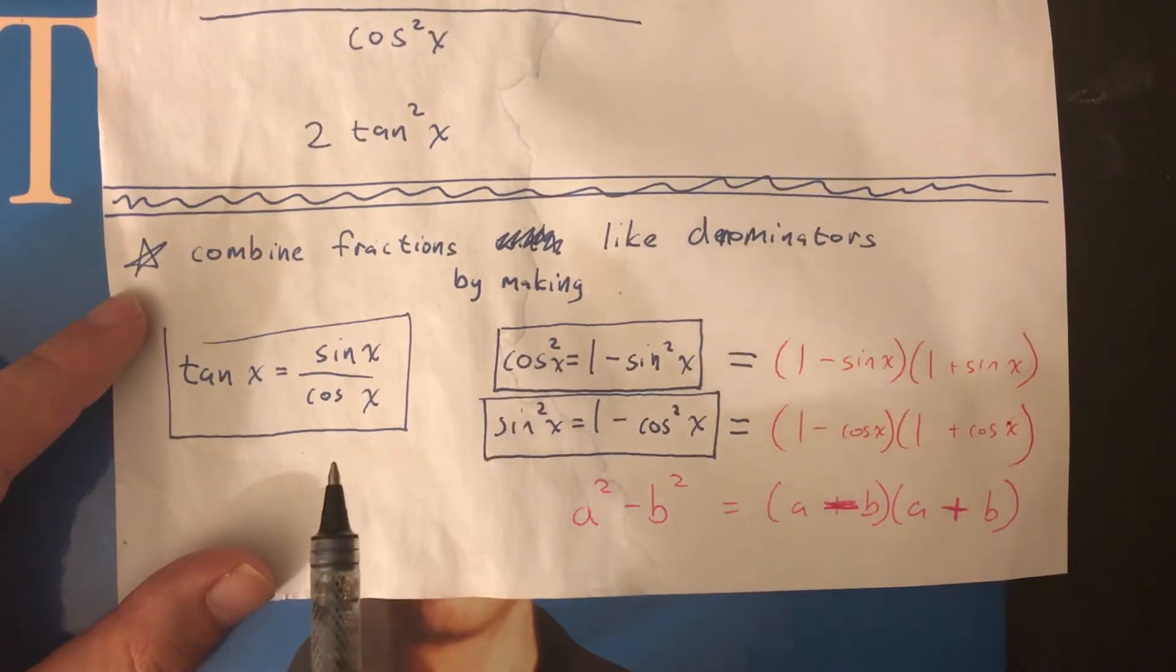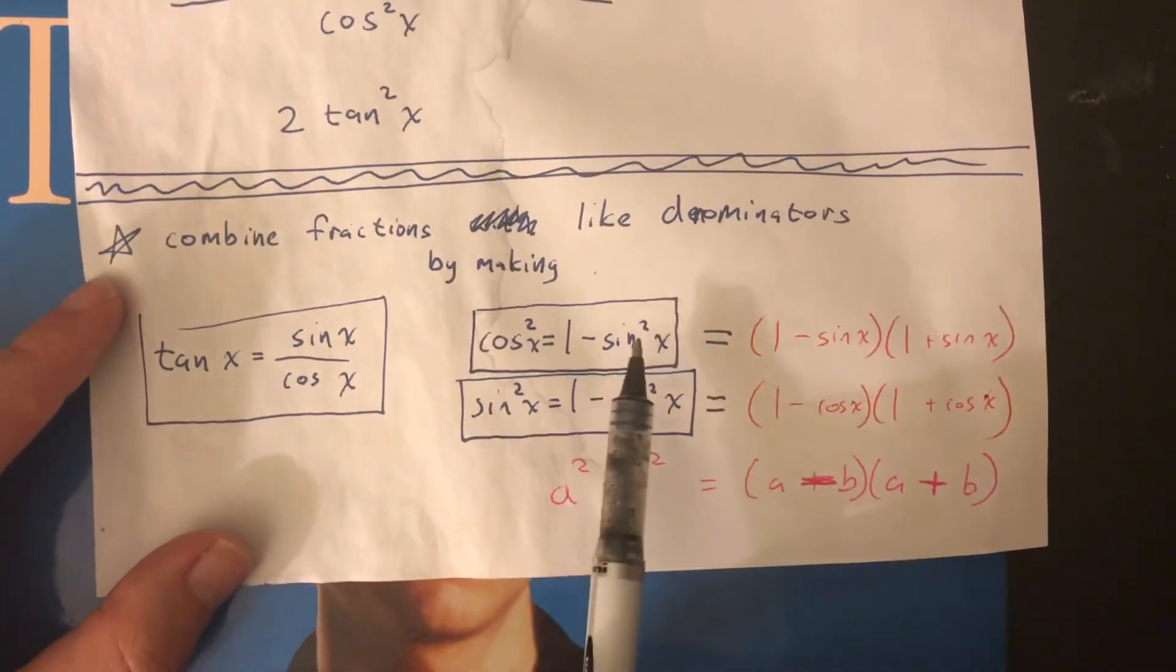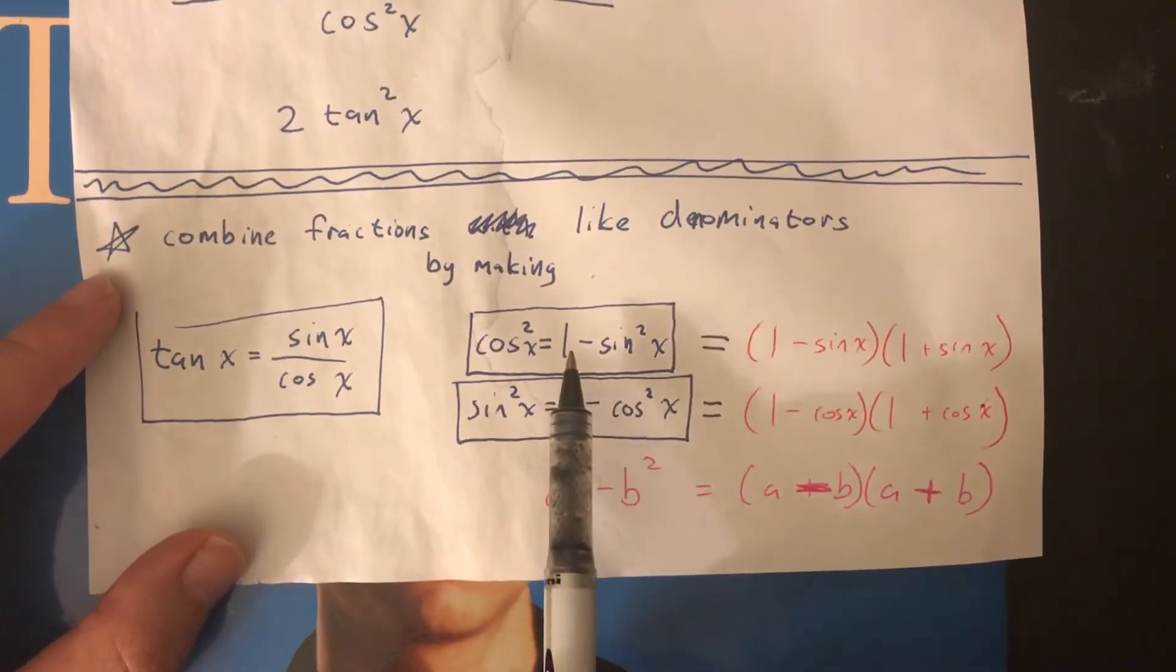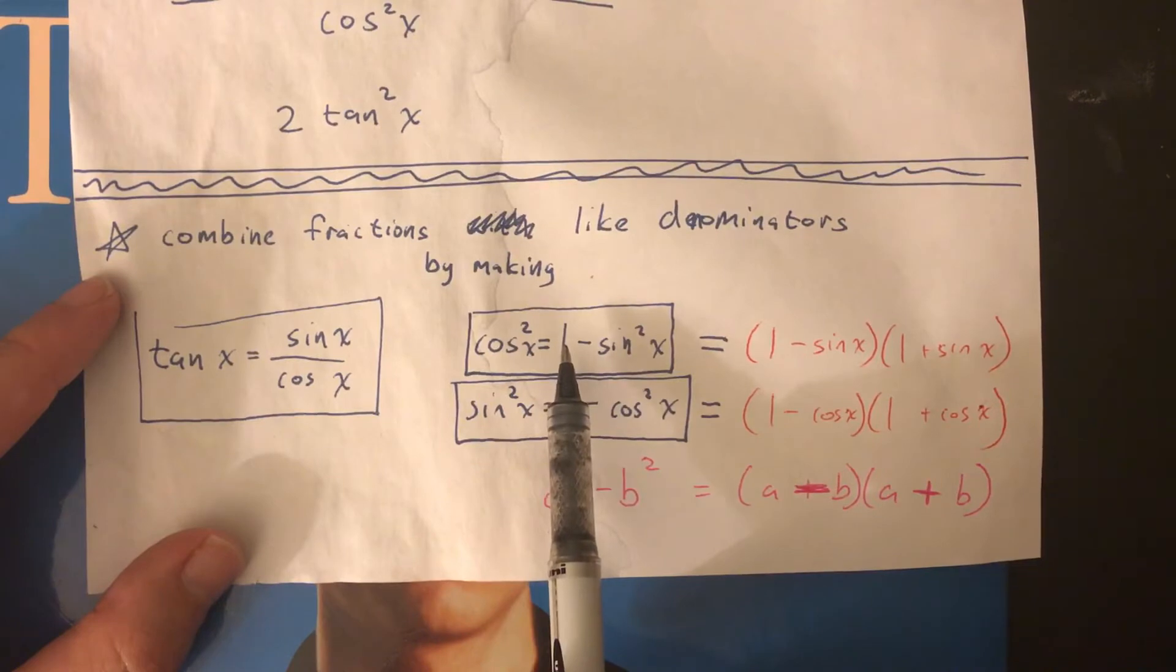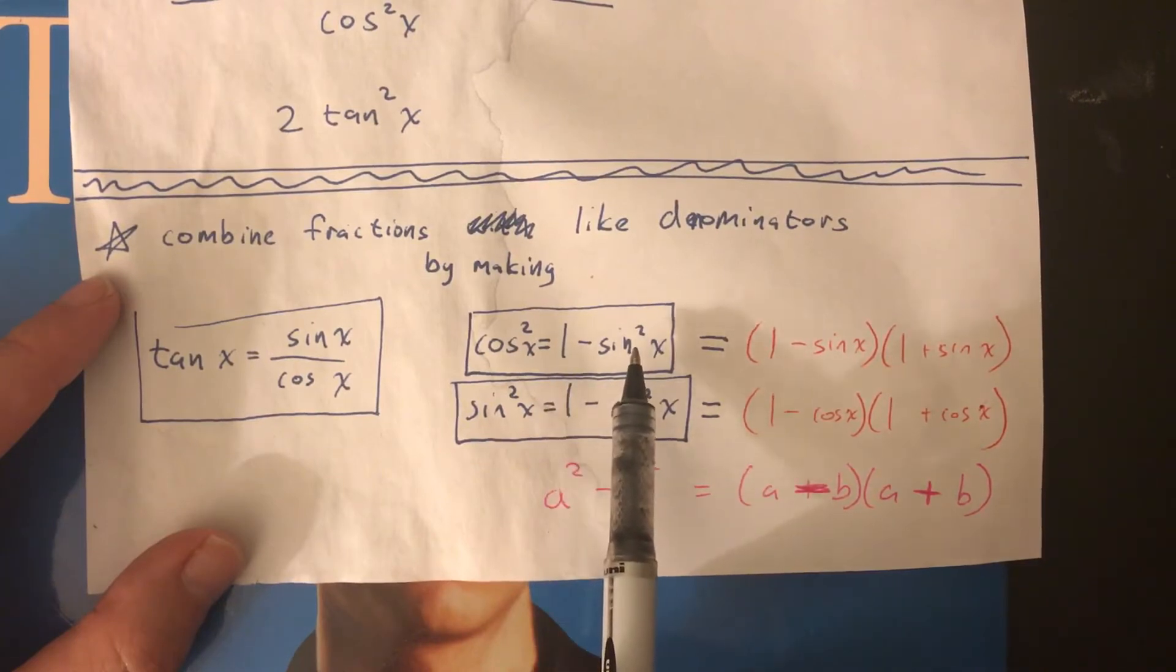We also have the cos squared and sine squared identities. Whenever you see a cos squared, you can always switch in a 1 minus sine squared. Also notice that when you have 1 minus sine squared, or 1 minus cos squared, you could rewrite this by factoring. This is a difference of squares. 1 is 1 squared. This is sine squared. It's like a squared minus b squared.